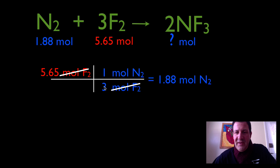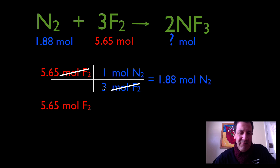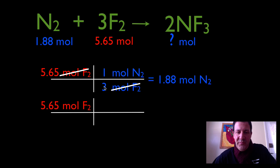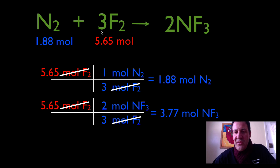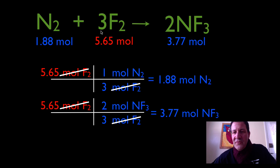Now let's figure out the number of moles of NF3. Once again, we're going to start with the number of moles of the substance that we have been given — 5.65 moles of F2. We make our conversion chart, which I call railroad tracks, then put moles of F2 on the bottom and moles of NF3 on the top. The molar ratio is three to two, so three goes on the bottom and two goes on the top. We cancel our molar units and we are left with moles of NF3. To react 5.65 moles of F2, we're going to need 1.88 moles of N2, and we're going to produce 3.77 moles of NF3.